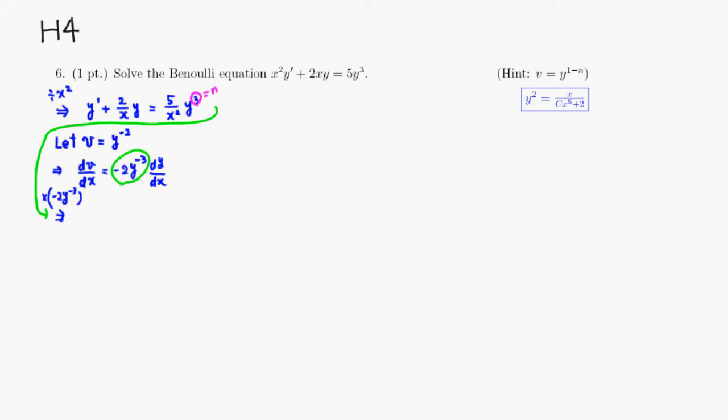Then we will get, let's see, so we have a negative 2 y to the negative 3 y prime, or dy over dx either way, and then we have a negative, you have 2 and 2, so that would be 4.